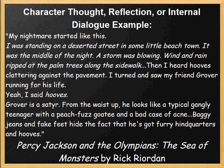An example is from Rick Riordan's Percy Jackson and the Olympians: The Sea of Monsters. It begins: 'My nightmare started like this. I was standing on a deserted street in some little beach town. It was the middle of the night. A storm was blowing. Wind and rain ripped at the palm trees along the sidewalk. Then I heard hooves clattering against the pavement. I turned and saw my friend Grover running for his life. Yeah, I said hooves. Grover is a satyr. From the waist up, he looks like a typical gangly teenager with a peach fuzz goatee and a bad case of acne. Baggy jeans and fake feet hide the fact that he's got furry hindquarters and hooves.' From this introduction we start to learn about the characters and that this isn't a typical story about a normal teenager.